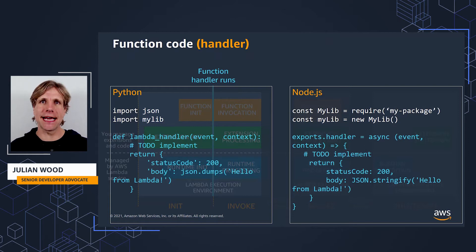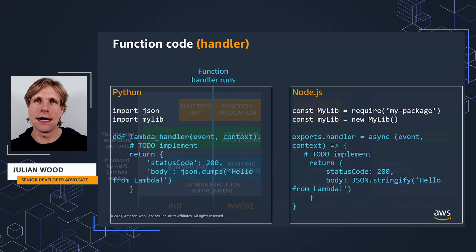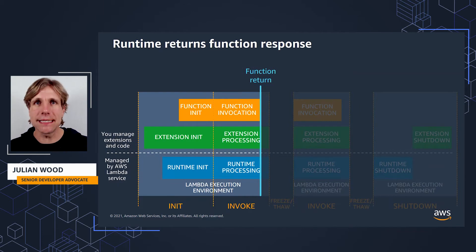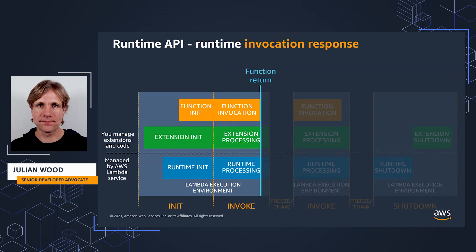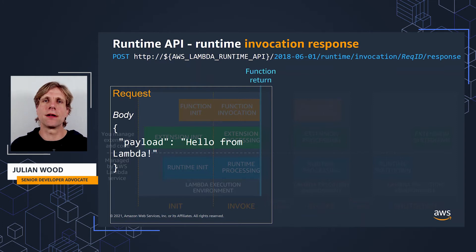The function runs your application code to do your fancy business processing. This may talk to external systems, calculate your unique business logic, whatever it's going to do. In this simple example showing Python or Node.js functions, which just returns hello from Lambda. Once the handler function finishes processing, it then returns its value. This is received by the runtime, and it's the runtime that sends the invocation response to Lambda using the runtime API to post the function response to the invocation response path. For synchronous invocations, Lambda then sends the response back to the client.